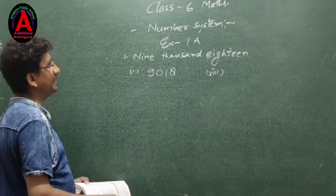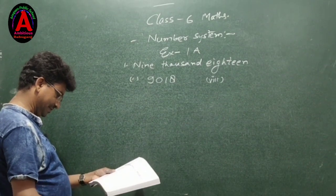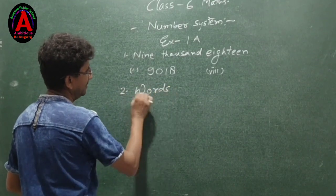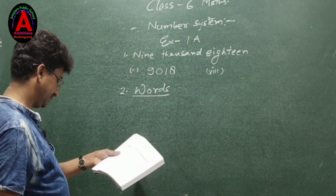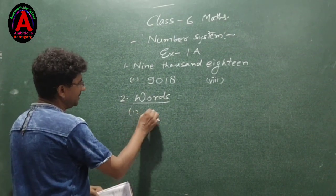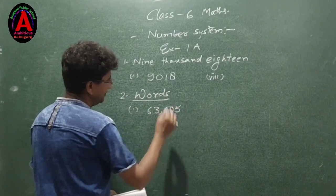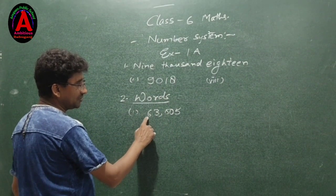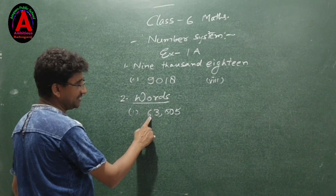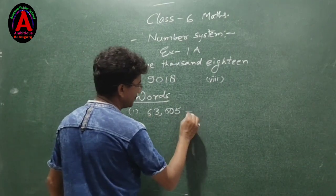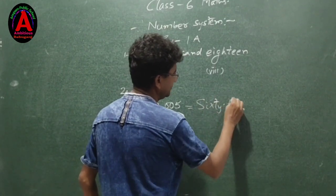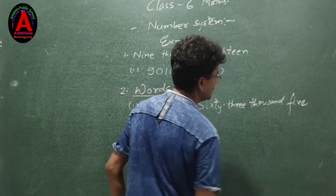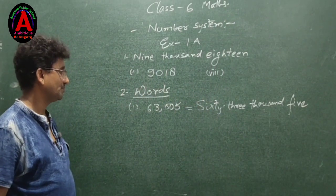The second question is: write each of the following numbers in words. For example, 63,005 — using place values ones, tens, hundreds, thousands, ten thousands: 6 × 10,000 = 60,000; plus 3,000; plus 5. So 63,005 is written as sixty-three thousand and five.